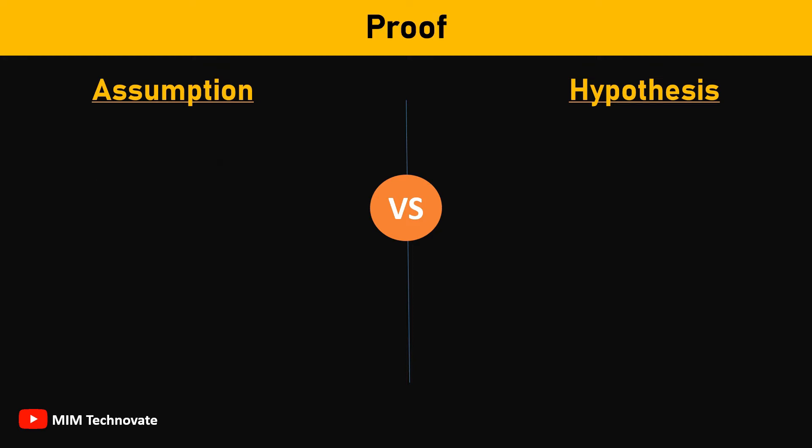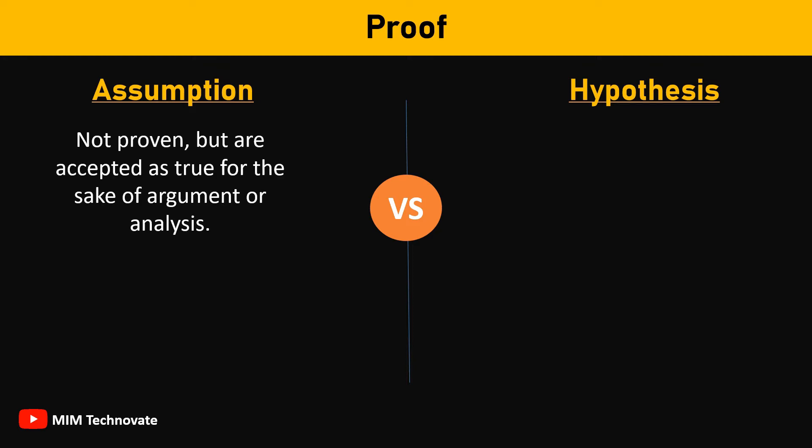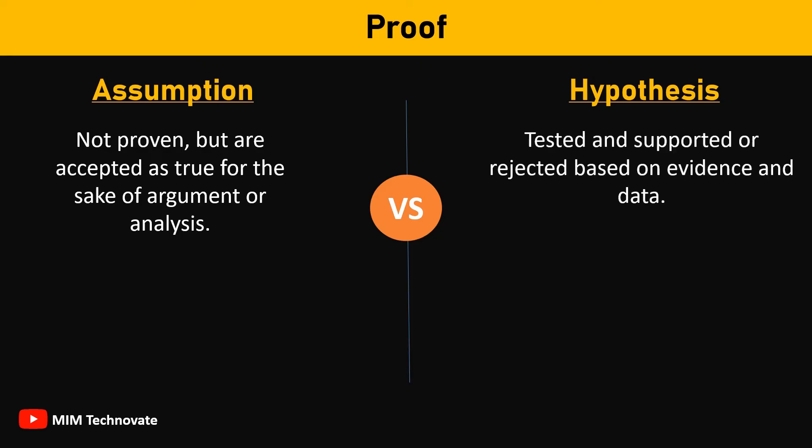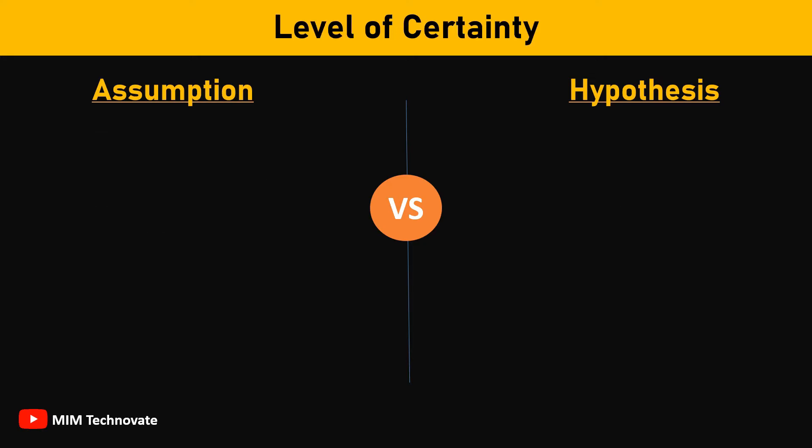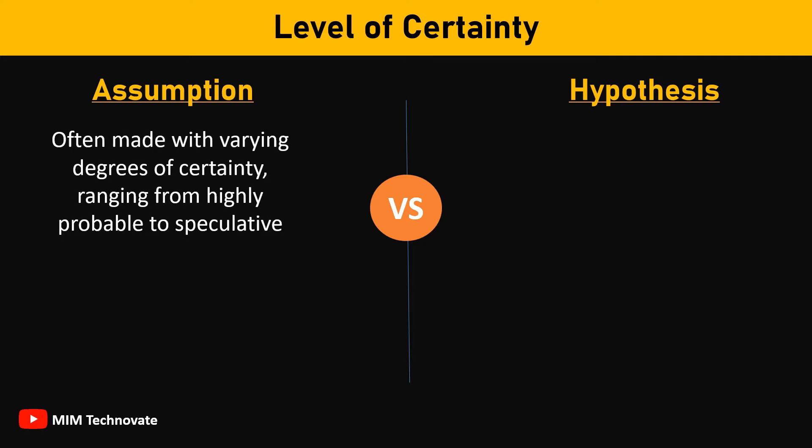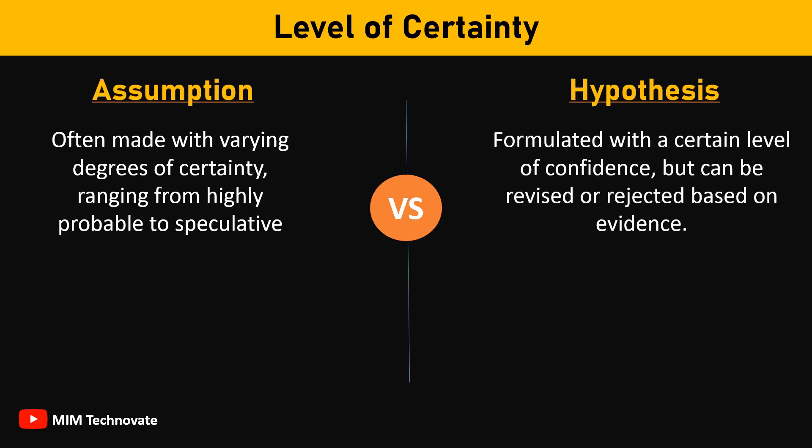Regarding proof, assumptions are not proven but are accepted as true for the sake of argument or analysis, while hypotheses are tested and supported or rejected based on evidence and data. Assumptions are often made with varying degrees of certainty, ranging from highly probable to speculative. On the other hand, hypotheses are formulated with a certain level of confidence, but can be revised or rejected based on evidence.